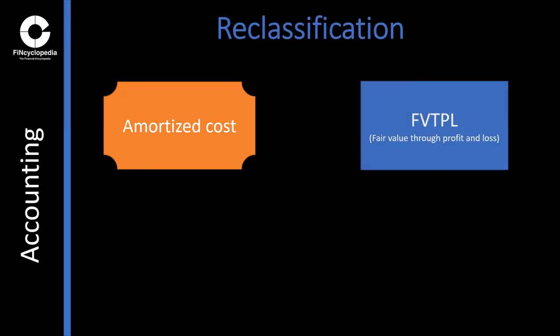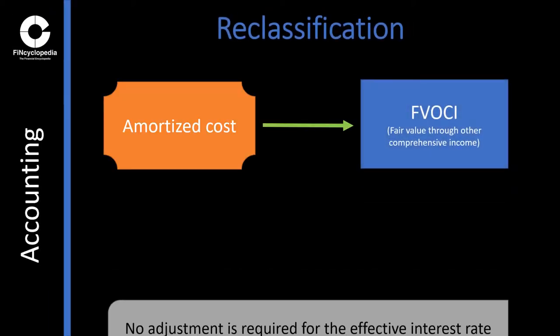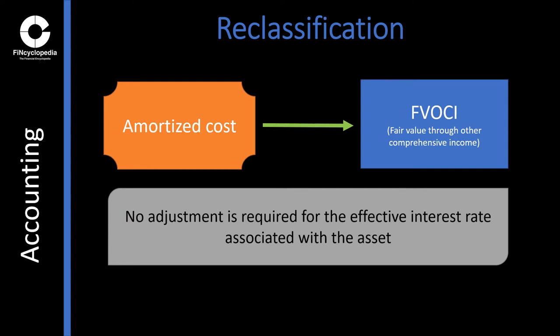For example, if an entity has reclassified from the amortized cost category to the FV TPL category, fair value will be measured at the reclassification date, with the difference from carrying amount being recognized in profit and loss. The accounting impact of a reclassification may or may not prompt a statement of recognized gains, losses, or interest, depending on the categories involved in the process.